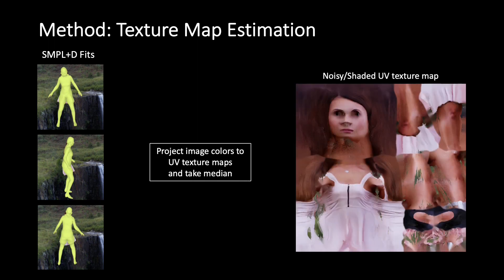We use the SMPL+D fittings to extract a UV texture map for each frame by projecting the colors of all visible vertices to the UV space. We obtain an aggregated texture map by taking the median of all visible vertices. However, the obtained texture map can be noisy and still have missing regions — for example, the hand regions are often very noisy since no hand tracking is performed during SMPL fitting. Also, to ensure plausible relighting, the unknown shading from the texture map has to be removed.